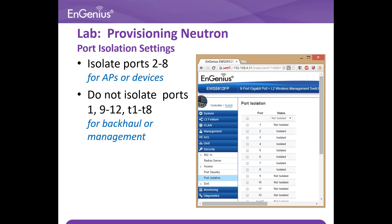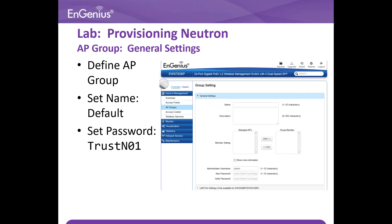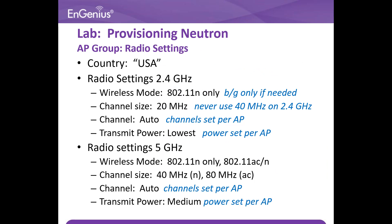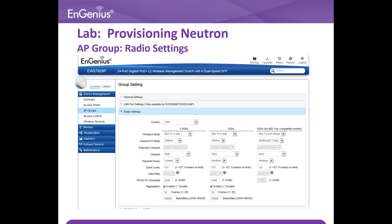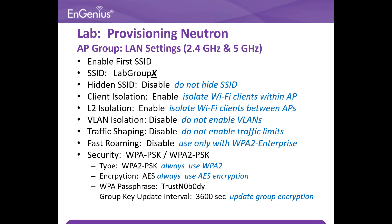In this slide, do the necessary port isolation as shown. Define the AP group with the given settings shown. Use the settings on the page as shown for the radio settings. This is the page to set the radio. For the 2.4 GHz and 5 GHz, set the settings as shown on the slide for the AP.